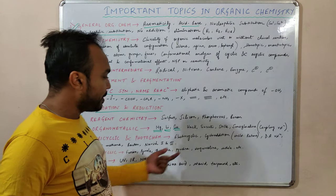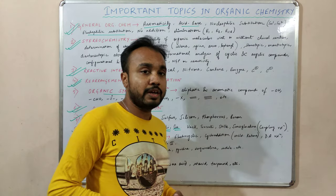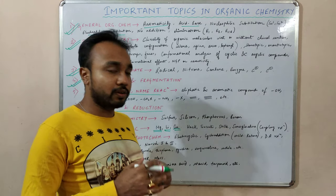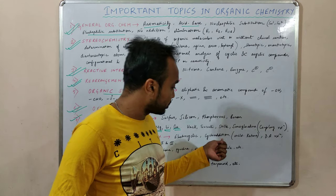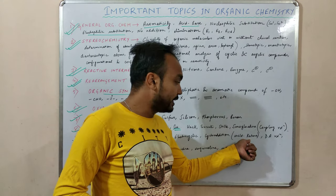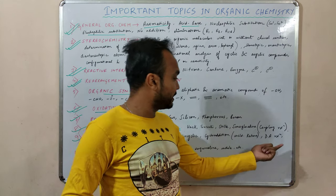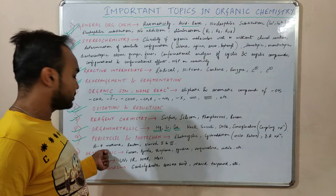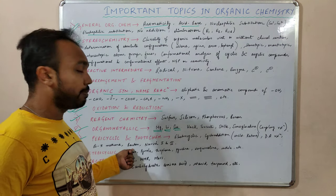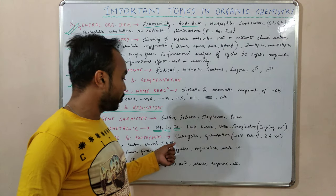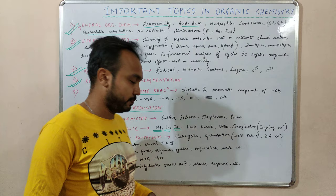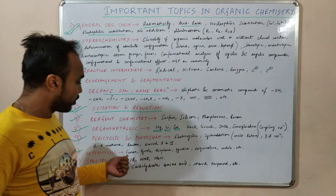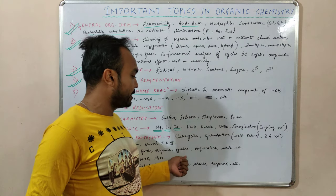Then come pericyclic reactions and photochemistry. In pericyclic reactions we will talk about electrocyclic ring opening and ring closing, cycloadditions including ketene [2+2] cycloaddition and the Diels-Alder reaction. Photochemical reactions covered include the di-pi-methane rearrangement, Barton reaction, and Norrish Type 1 and Type 2 reactions.